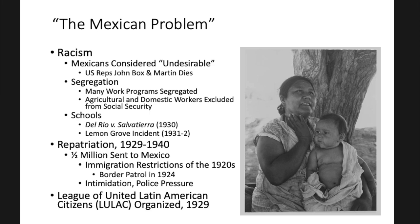Segregation continued as well. Many of the work programs — the CCC, WPA, and others — were segregated, even for Mexican and Mexican Americans, as well as for African Americans and sometimes Asian Americans. Agricultural and domestic workers were excluded from the new Social Security program, which means many African American and Mexican American families involved in agriculture and domestic work had their wages excluded from Social Security — so they didn't have that protection later on.